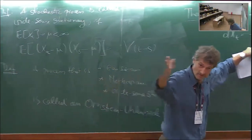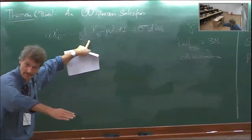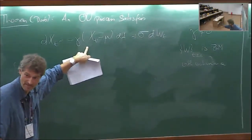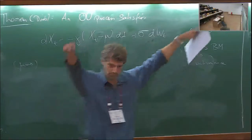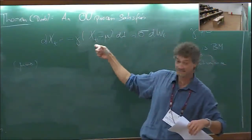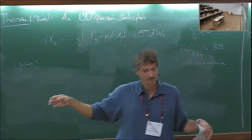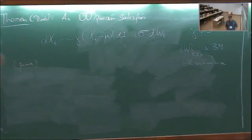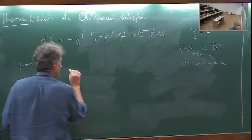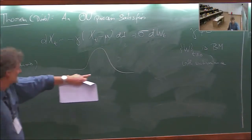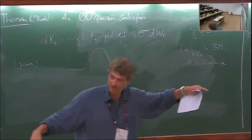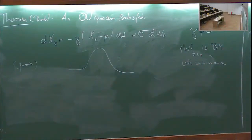If gamma is positive, you're drawn back to the mean — it pushes you back. So if you have a big excursion, you will return to the mean. This allows you to get a nice probability density function for your process with finite variance, because the large excursions possible with pure Brownian motion are suppressed.